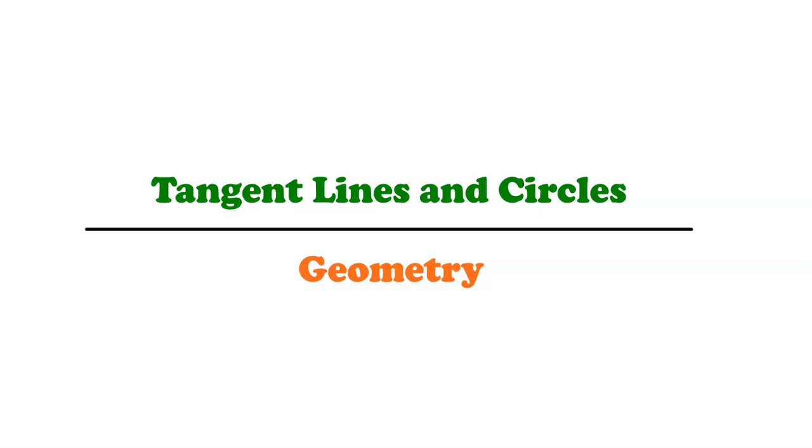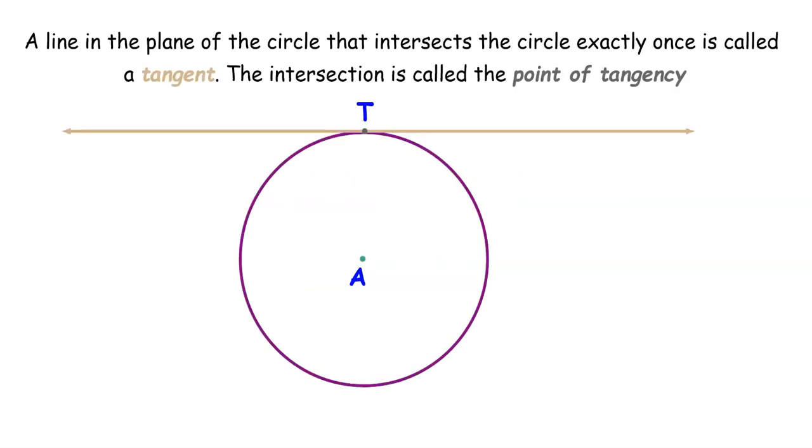This video gives basic definitions and examples of tangent lines in circles. Back in the introductory video to circles, we saw that a line that intersects a circle exactly once is called a tangent line, and the intersection point is called a point of tangency.